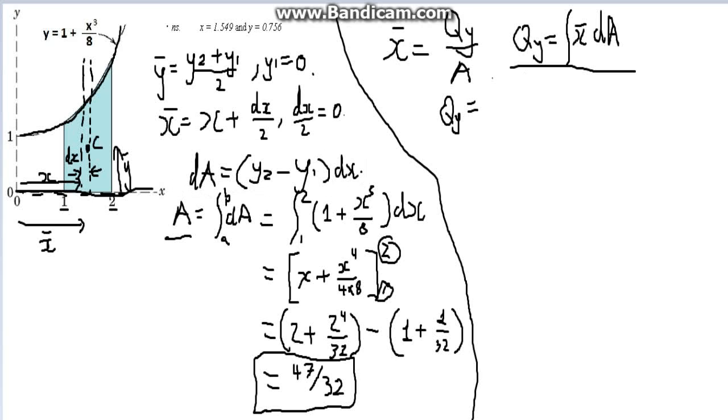So, bounded between two limits, so that's a, and that's b. So, that's bounded between one and two, and you've got your x-coordinate, so it's just simply x multiplied by one plus x cubed divided by eight. Whole thing, dx, where Qy equals to.